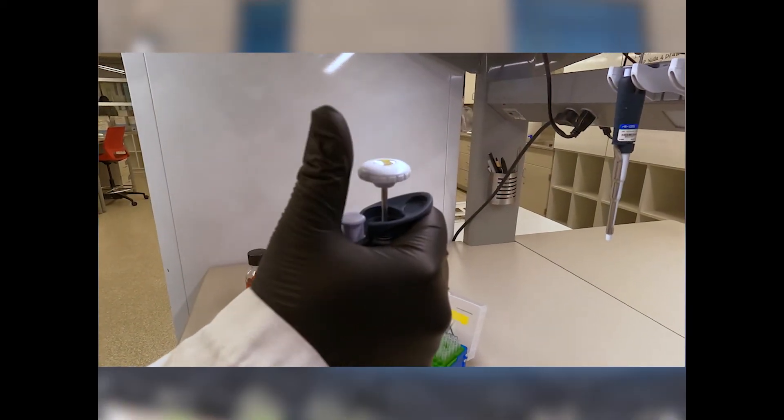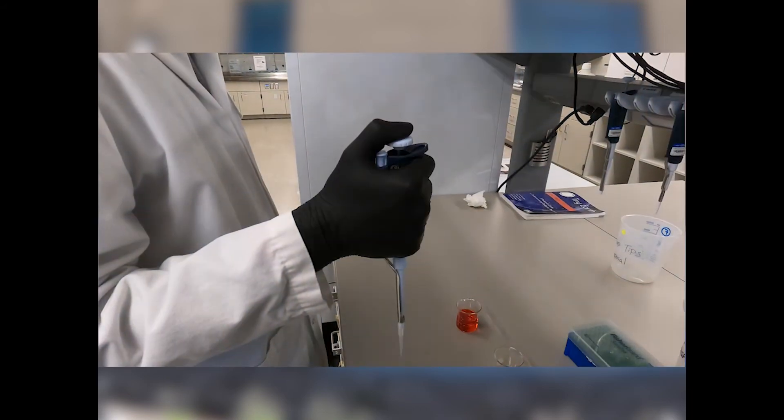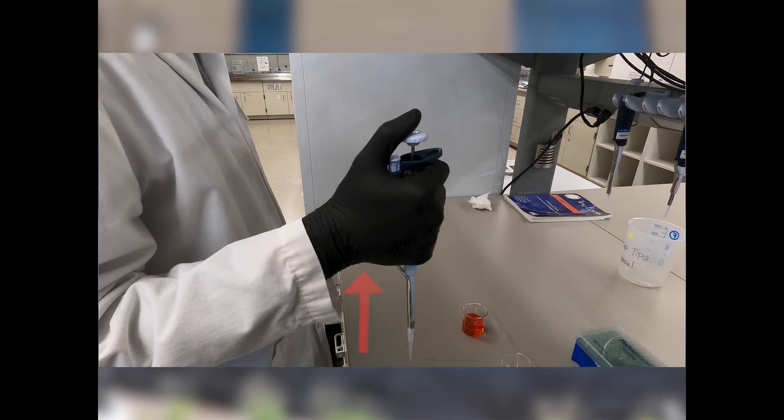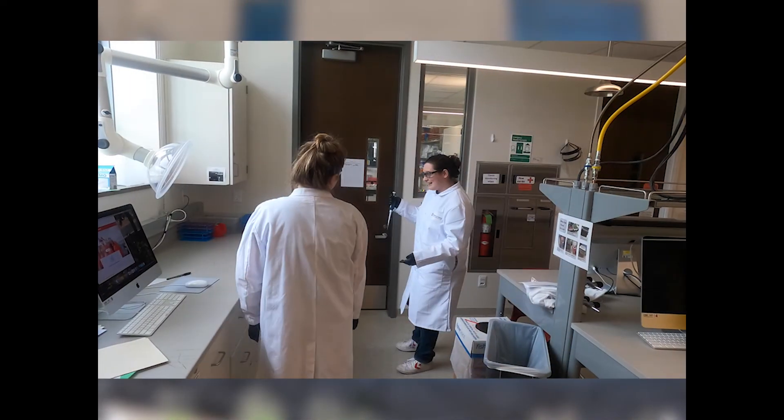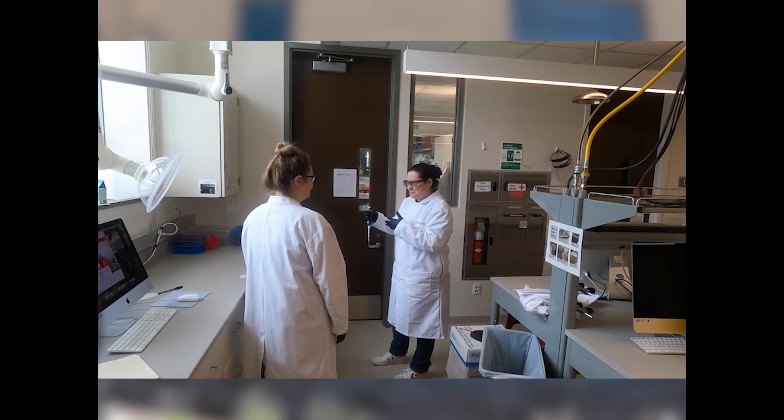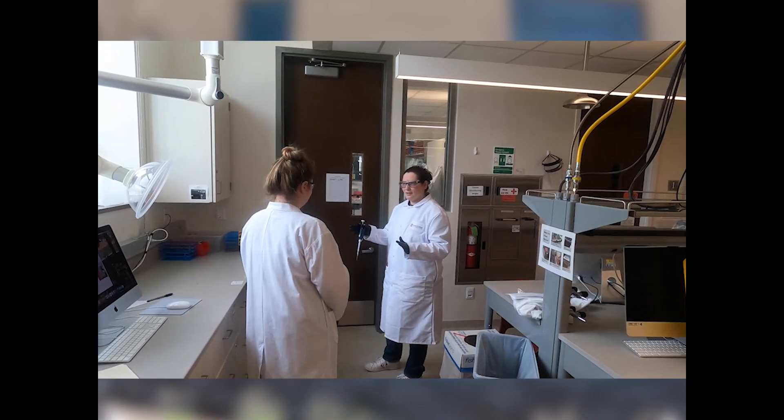Now, slowly release the plunger so that it returns to its starting position. Be careful not to release the plunger quickly. Doing so could cause liquid to go beyond the tip and enter the micropipette itself, which could lead to damage and or contamination of the pipette. If you suspect that liquid has entered the micropipette, notify a TA or instructor who can easily disassemble and clean it.